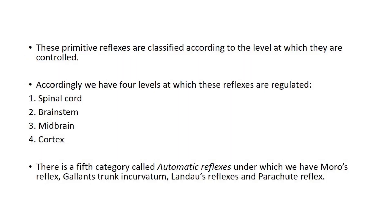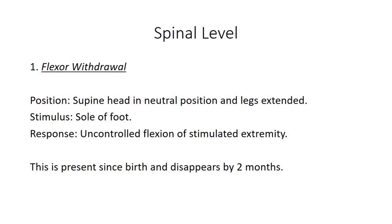These primitive reflexes are classified according to the level at which they are controlled. Accordingly, we have four levels at which these reflexes are regulated: spinal cord, brainstem, midbrain, and cortex. There is a fifth category called automatic reflexes, under which we have the Moro reflex, Gallant, Strung Incurvatum, Landau reflex, and parachute reflex.